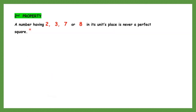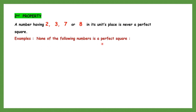The second property says a number having 2, 3, 7, or 8 in its units place is never a perfect square. We just saw the first property — numbers should end in particular digits. Whereas here, if it's ending in 2, 3, 7, or 8, it is never a perfect square. For example, none of the following numbers is a perfect square: 12, 22, 32, 42, 52 — any number ending in 2 is never a perfect square, it doesn't have a perfect square root.